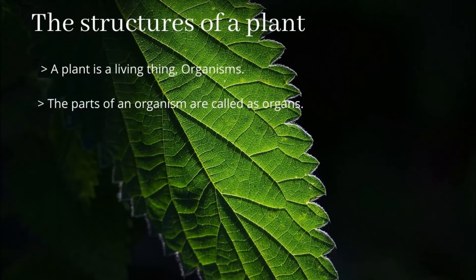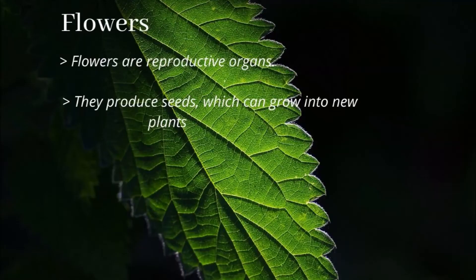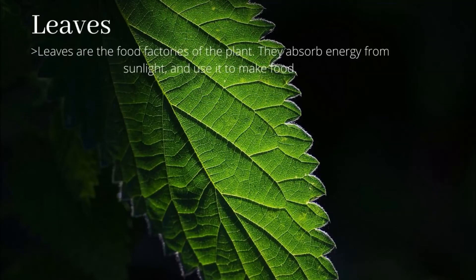The parts of an organism are called organs. This is a picture of the structure of a plant. Flowers are reproductive organs — they produce seeds which can grow into new plants. Leaves are the food factories of the plant; they absorb energy from sunlight and use it to make food.